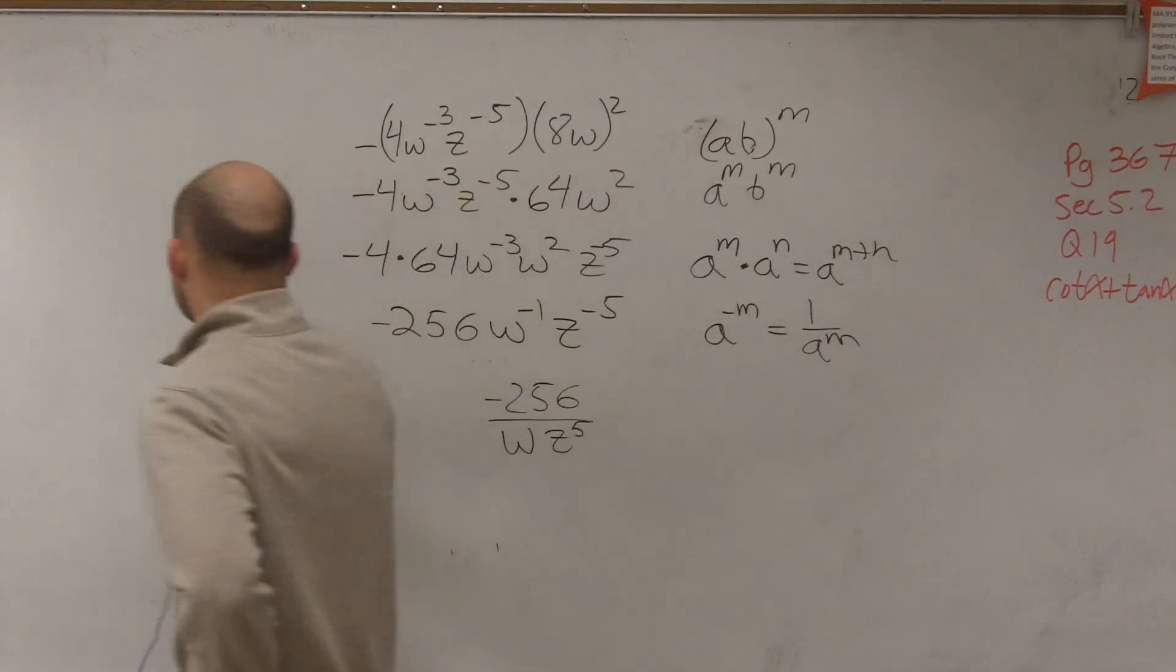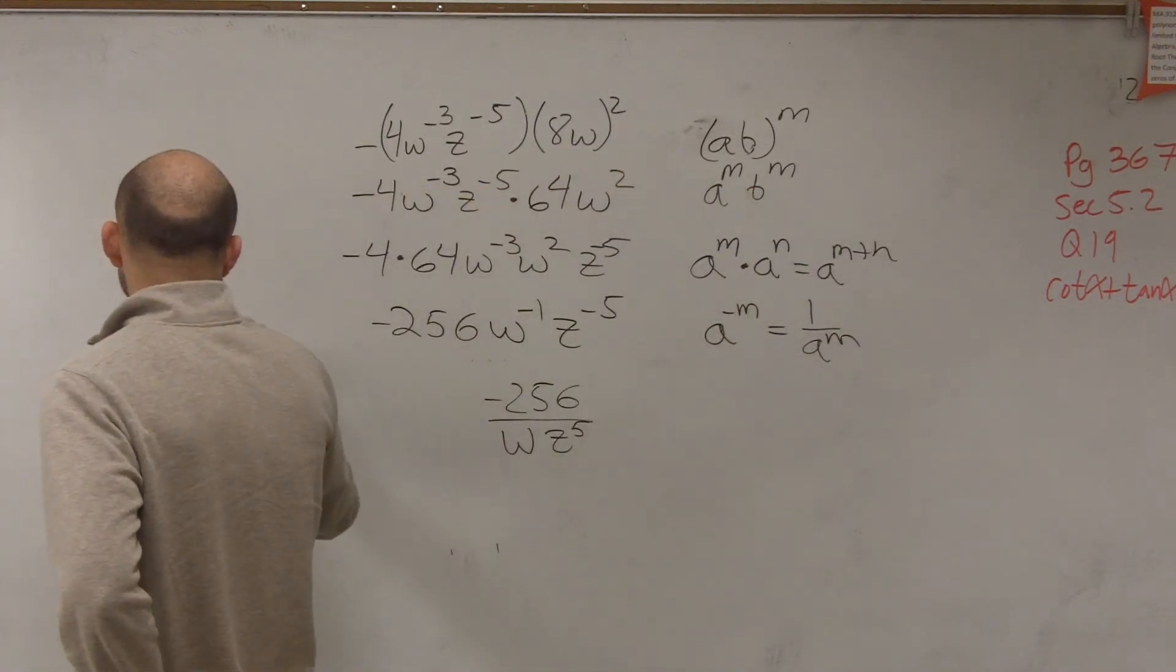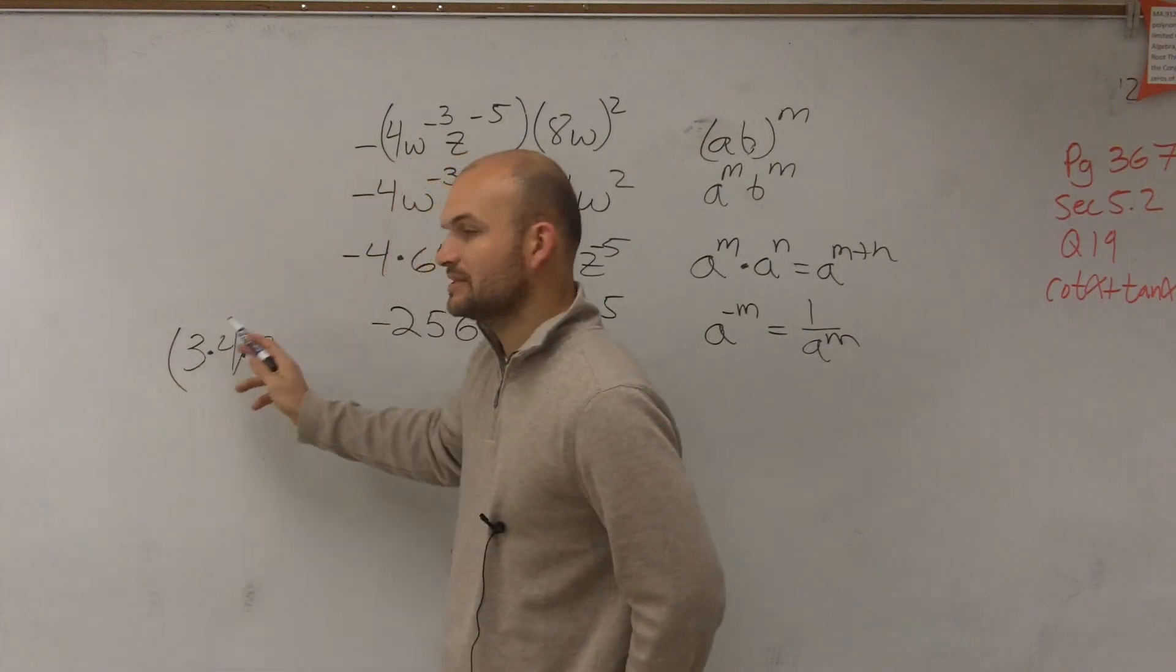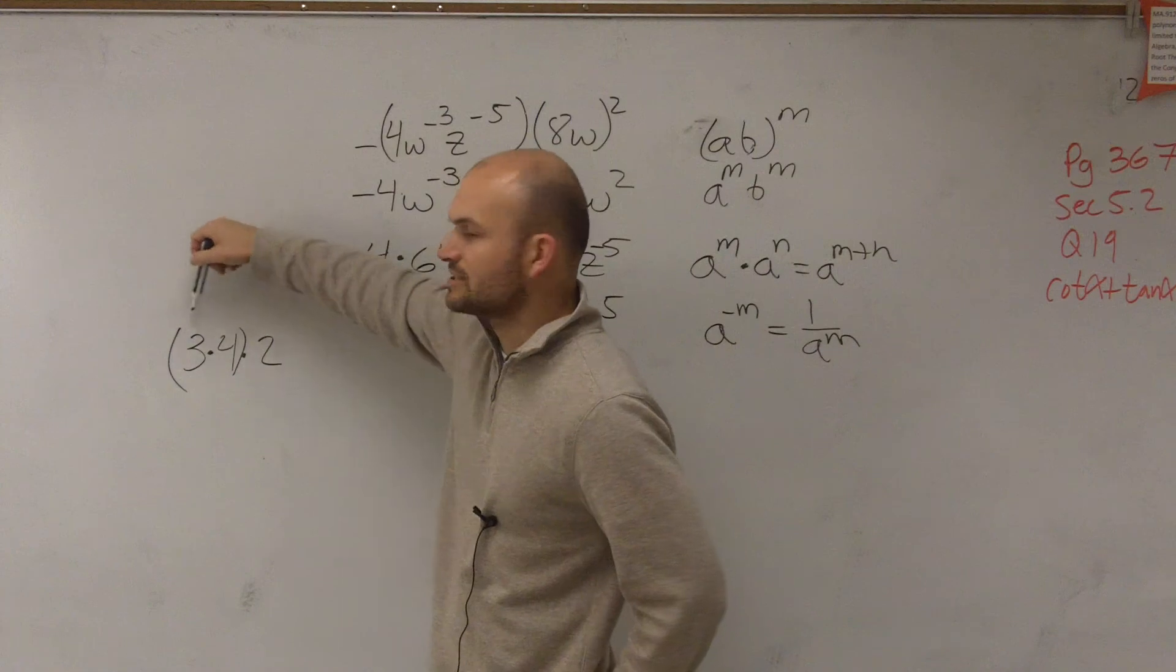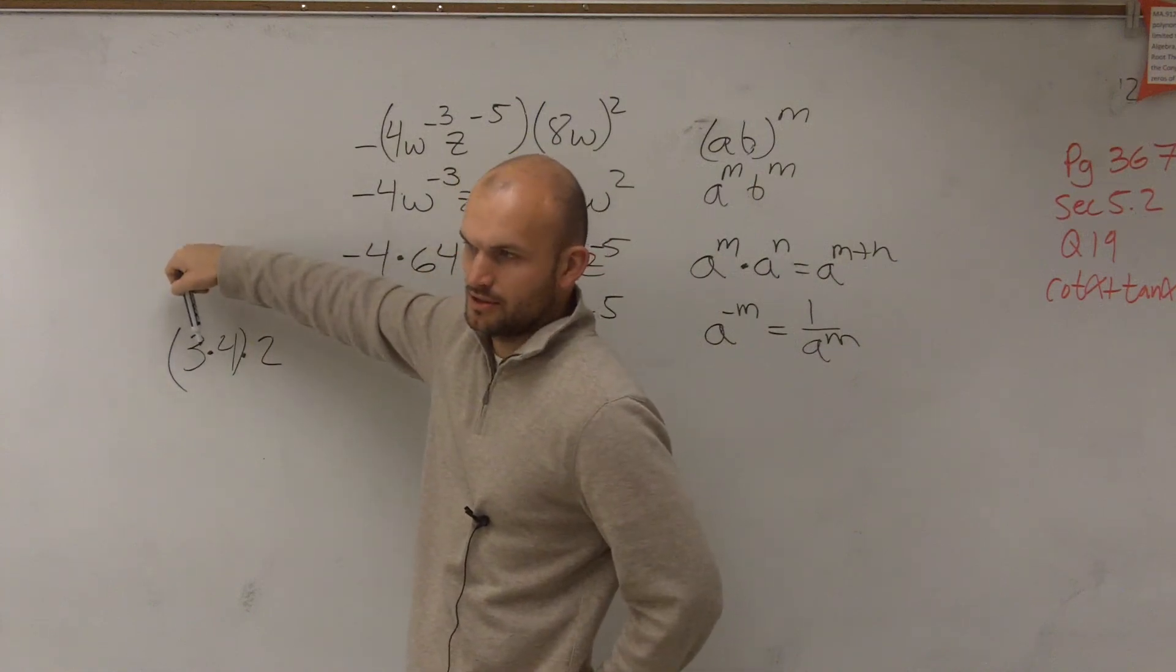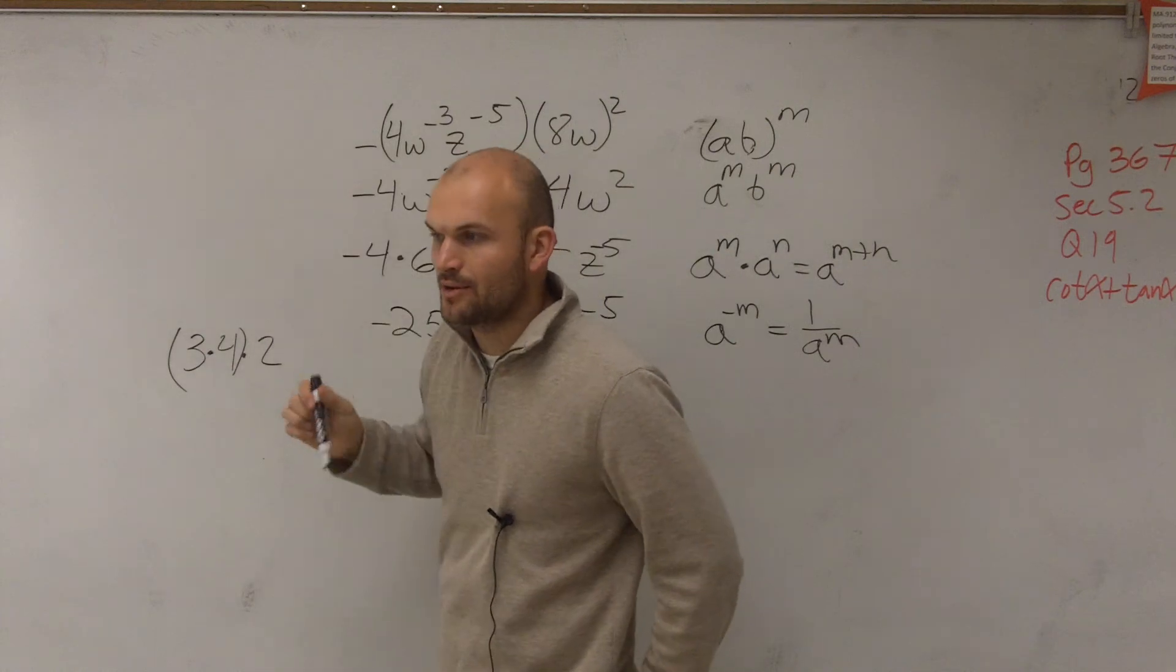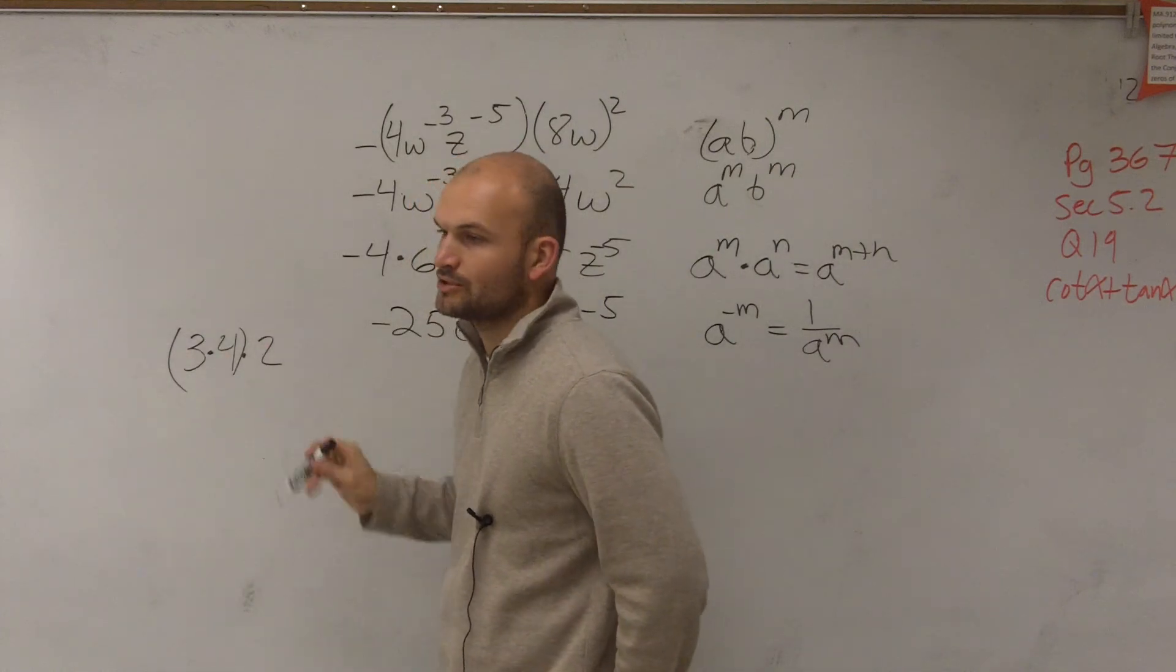It's just like this: 3 times 4 times 2. What do you do? You just multiply 3 times 4 times 2. You don't multiply the 2 times the 3 and the 2 times the 4. It's just all multiplied across. If it was addition, that's when you apply the distributive property. But it's just multiply them across, okay?